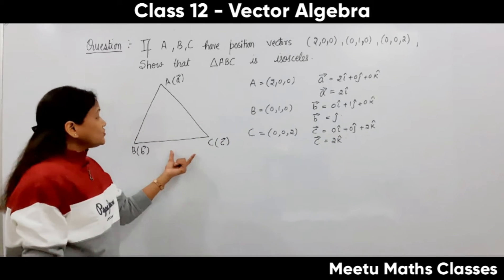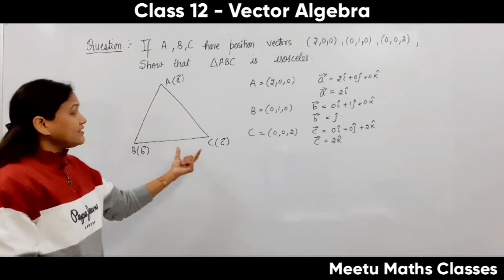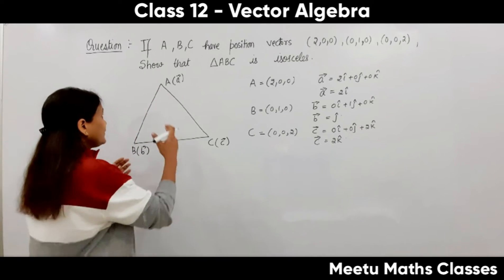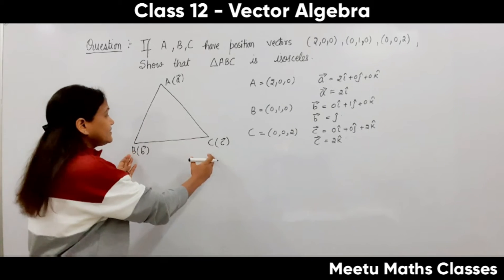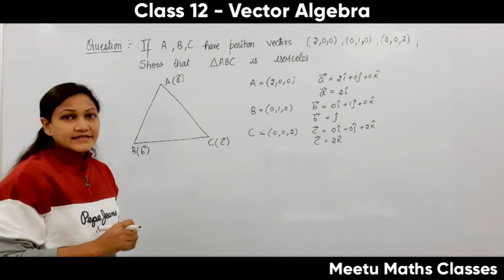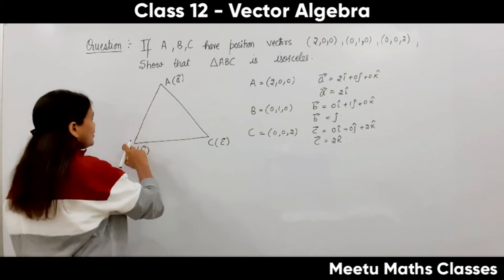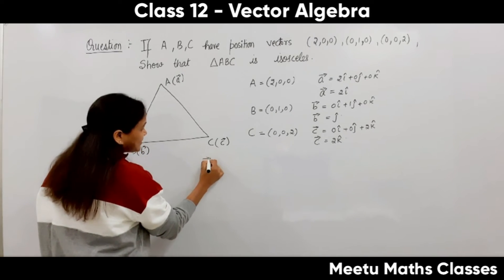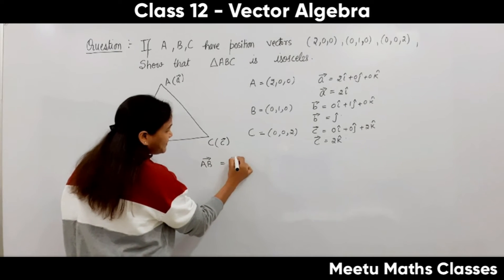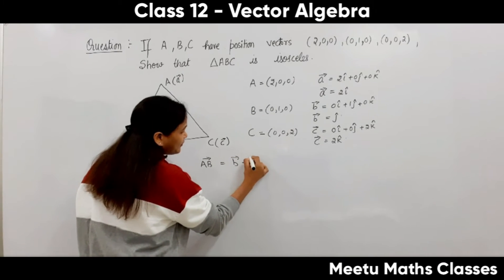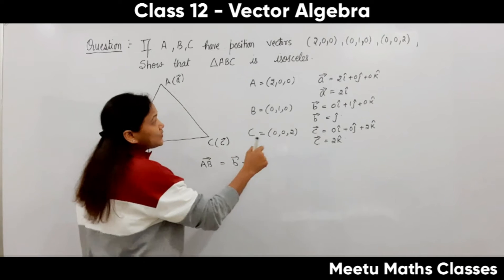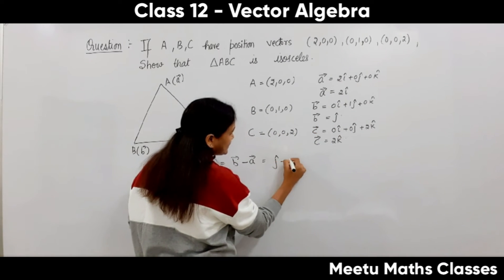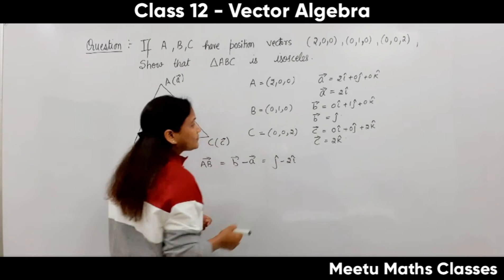Now we are supposed to check whether this triangle is isosceles or not. To do that, we have to find the lengths AB, BC, and AC. First, we find vector AB. Vector AB equals the position vector of B minus the position vector of A, which is j minus 2i.